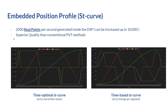The most important part is that the motion profile engine generates 2,000 real points per second locally inside the controller for the position controller, and this can be increased up to 10,000 points. All of these points are real, providing superior quality compared to conventional PVT methods because there is no interpolation involved.